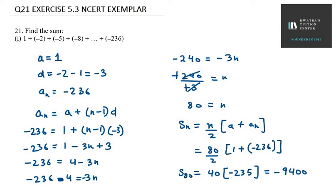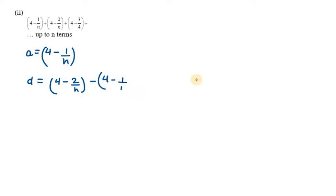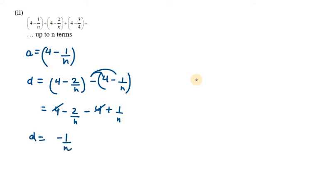Let's do the second part. The series is 4 minus N, 4 minus 2N, up to N terms. We need to find the sum. First we define A and D. A is 4 minus N. D will be the difference between second and first term: (4 minus 2N) minus (4 minus N). 4 cancels, leaving N minus 2N, so D is minus N.